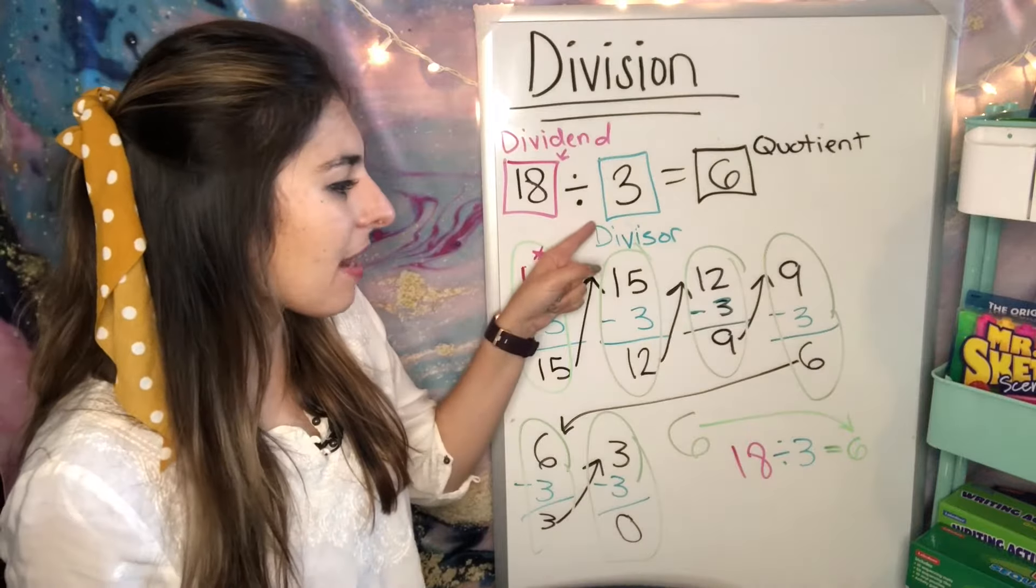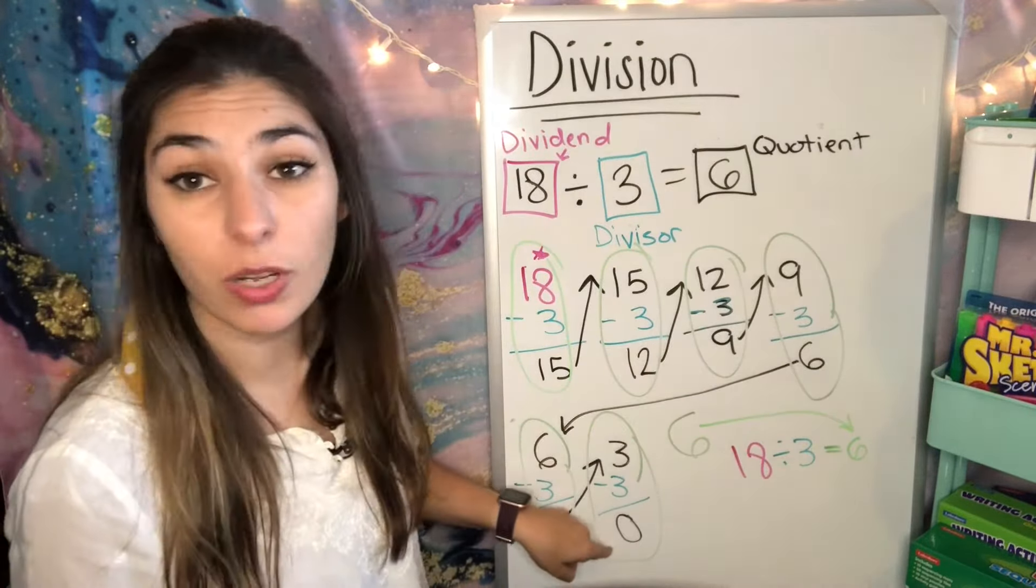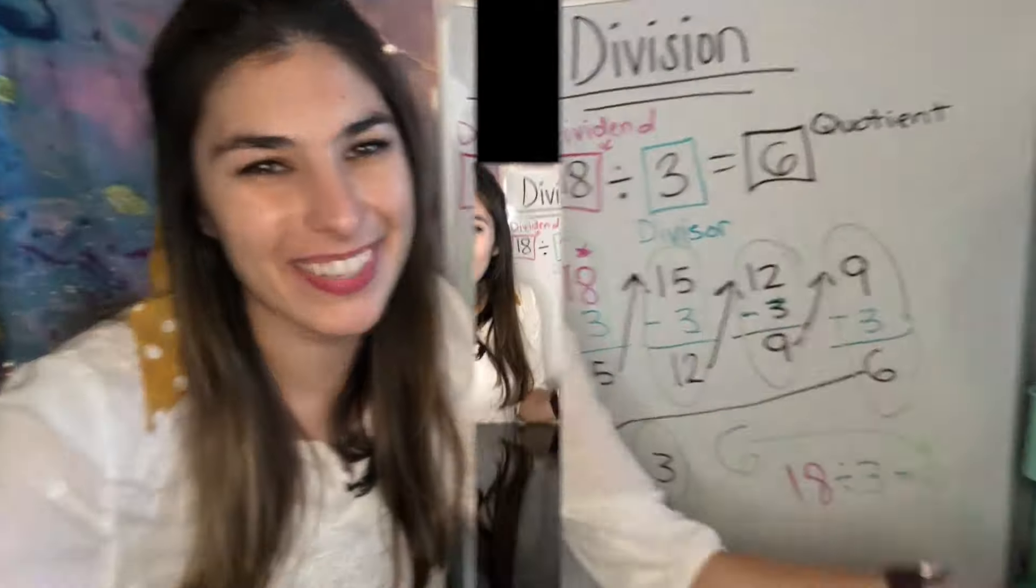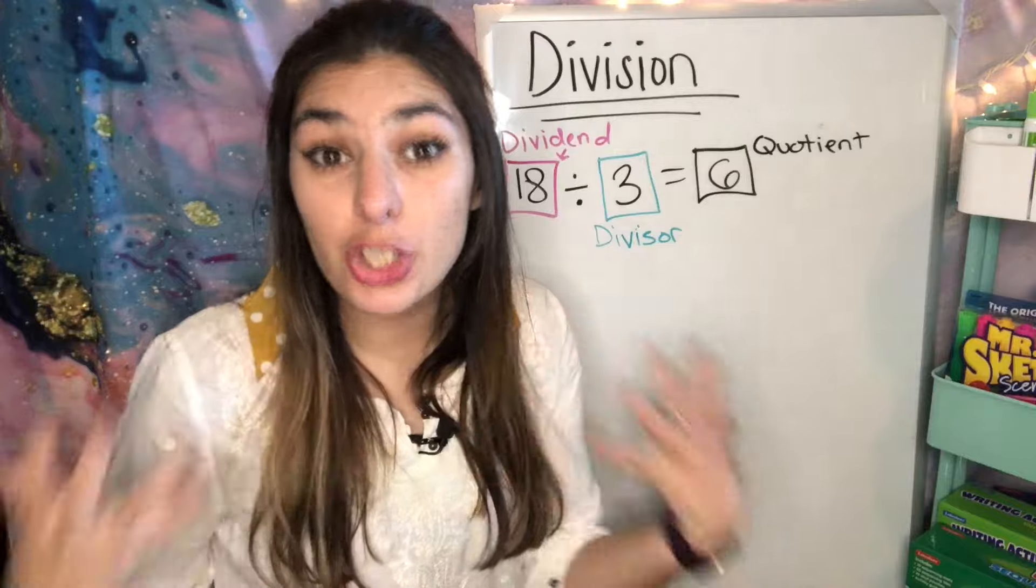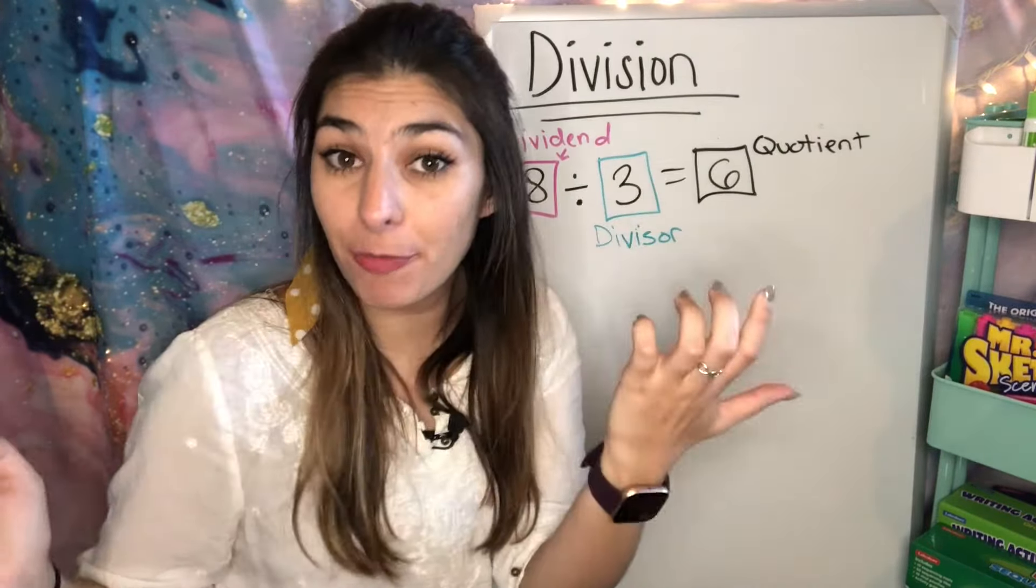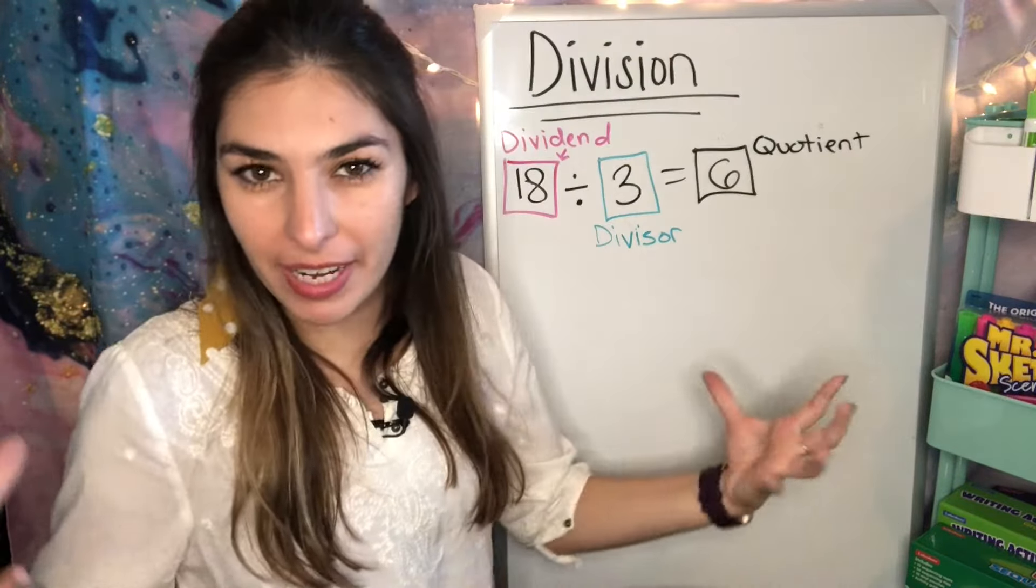So you're taking that dividend, subtracting that divisor over and over again until you get 0. Once you get 0, you're done. Count up how many equations you did. That's your quotient. I like to think of division as sharing. I have this big number that I want to share with X amount of people, our divisor amount of people. So just think of division as sharing.